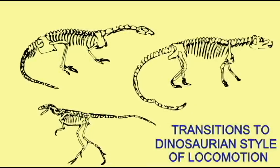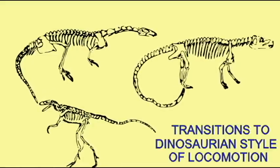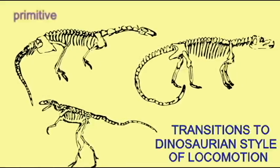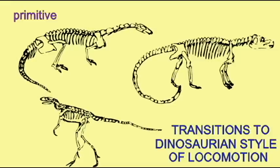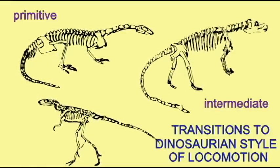A number of prominent creationists have made definitive statements that dinosaurs have not evolved from other groups and that there are no animals in the fossil record which have some but not all the features of dinosaurs.